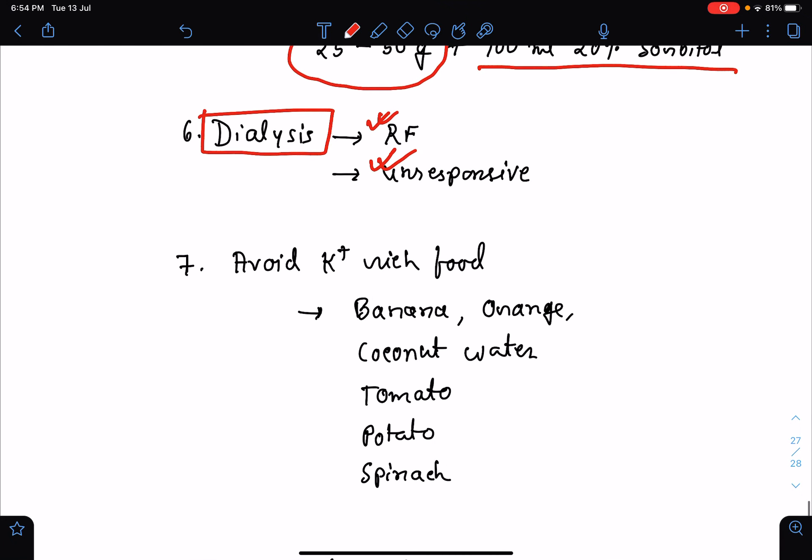We need to advise the patient to avoid potassium-rich food. What are the foods which are rich in potassium? For example, banana, orange, coconut water. They are very much rich in potassium. Tomato, potato, spinach are also rich in potassium. We need to advise the patient to avoid taking this group of food to prevent hyperkalemia.